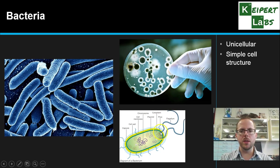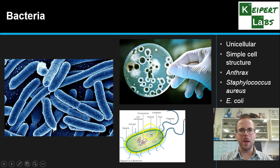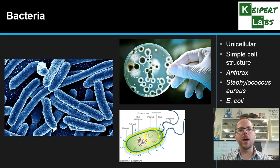Bacteria also have what we call a flagellum, which is Latin for whip — a whip-like tail that allows the bacterium to move from place to place. It absorbs nutrients through the outside of the cell. Some examples of pathogenic bacteria include anthrax, or Bacillus anthracis; Staphylococcus aureus, also known as golden staph, which can be particularly dangerous in hospitals because it exists on most people's skin and can cause infection through wounds; and also E. coli, one of the main reasons we wash our hands after using the toilet.